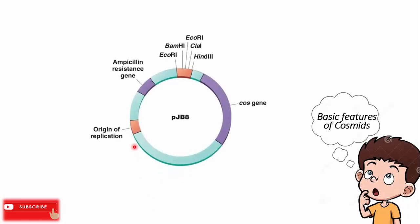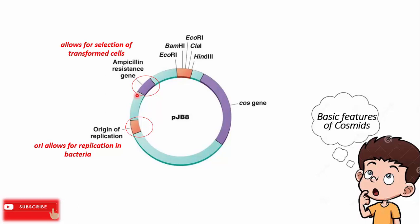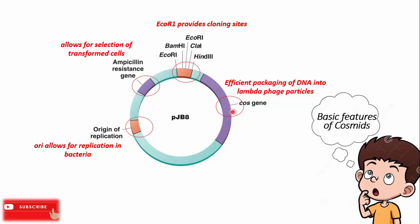Here you can see the cosmid vector has an origin of replication, so it can propagate inside the bacteria. It also has an ampicillin resistance gene — this resistance gene allows for the selection of recombinants inside the bacteria. It also has a multiple cloning site with a bunch of restriction sites where we can cut the vector to insert our gene of interest. They also have cos sites, which are required for efficient packaging of phage DNA in the phage head.